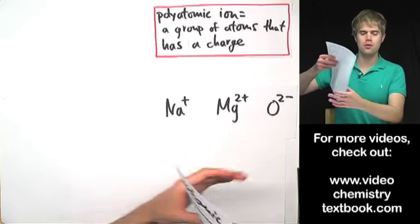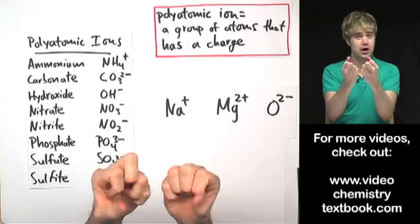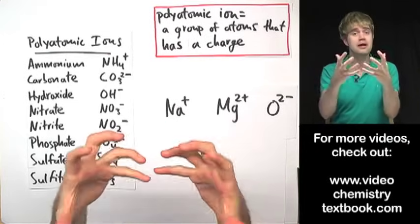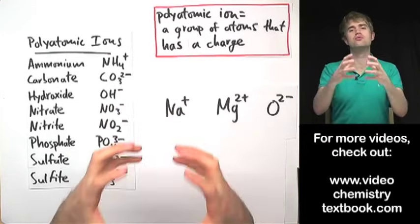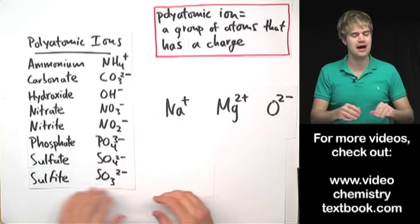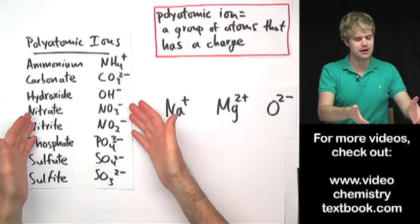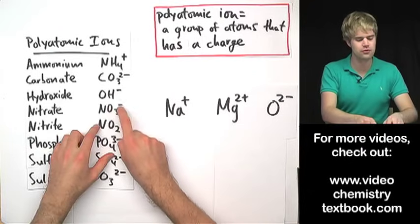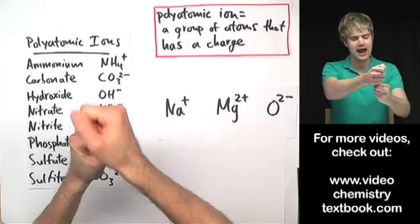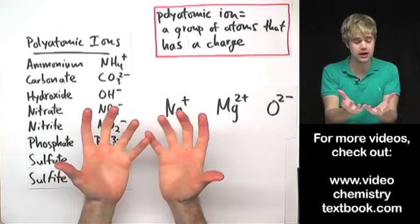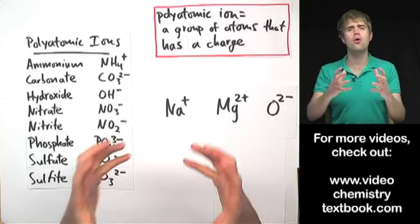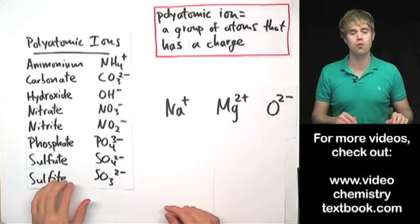Polyatomic ions are what happens when more than one atom comes together and they form a big group of atoms and then that group of atoms itself has a charge. So polyatomic ions are things like NO3, one minus, where we have one nitrogen and three oxygens all connected together to form a group and that whole group has a charge of one minus.